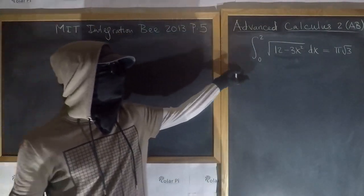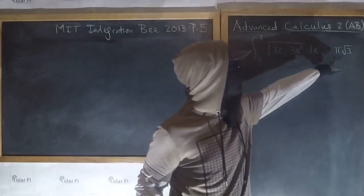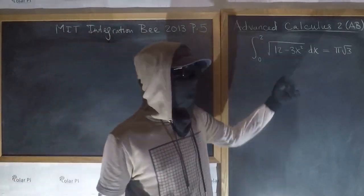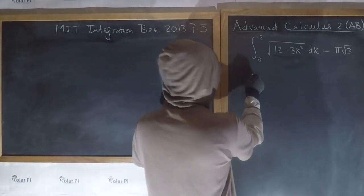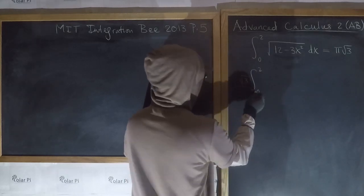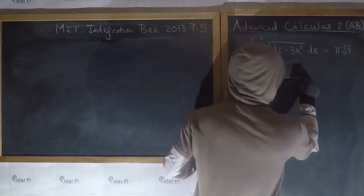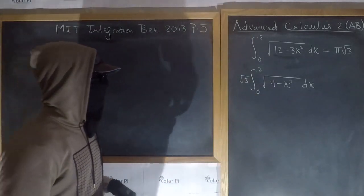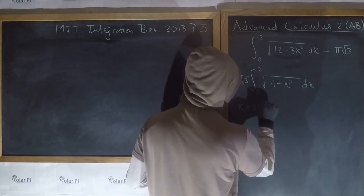We've already seen this integral solved using the geometry equation of a circle. This time we're going to do it using trig substitution and confirm we get the same answer. Just as before, we write root three times the integral of square root of four minus x squared. The trig substitution is: let x equal two sine theta.